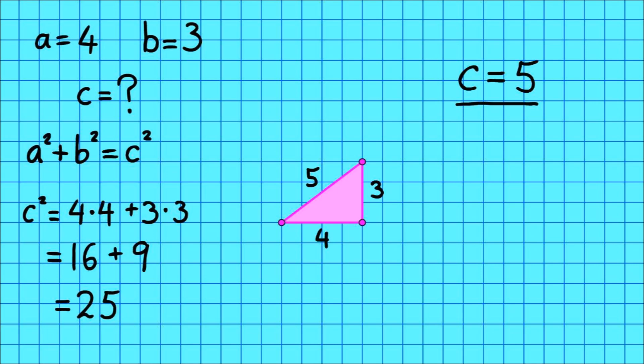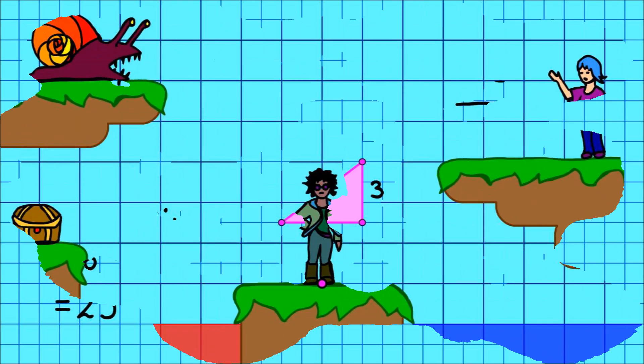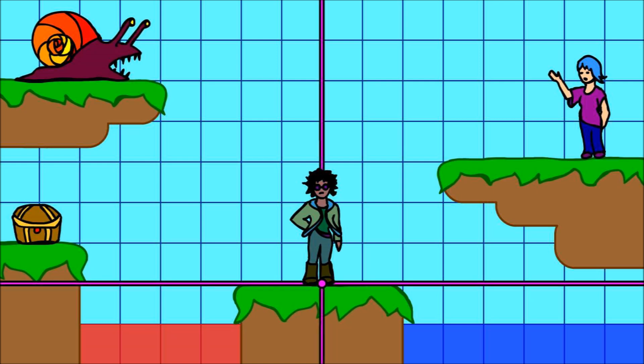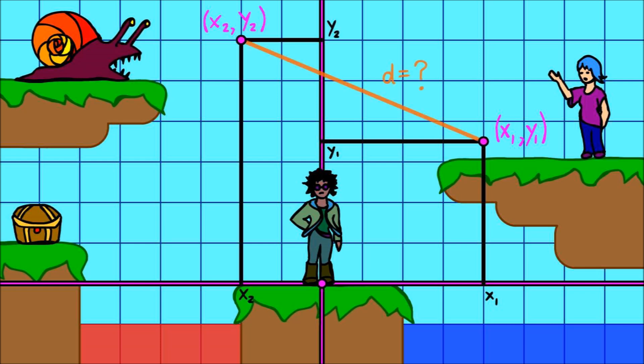What if you're not starting at the origin, though? What if you're trying to find the distance between two random points on the plane? Let's call them x1, y1, and x2, y2, perhaps. How can you use the Pythagorean theorem to find that distance?